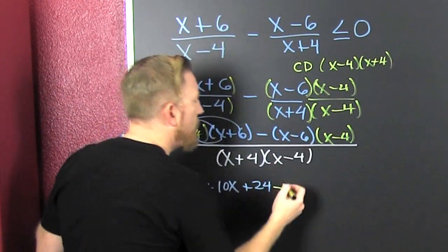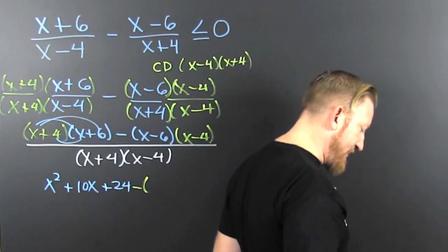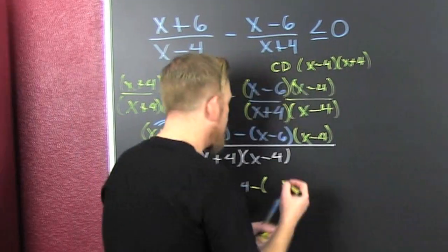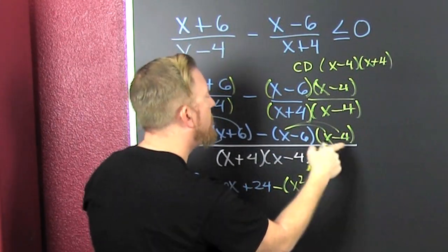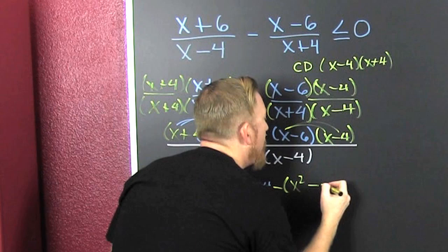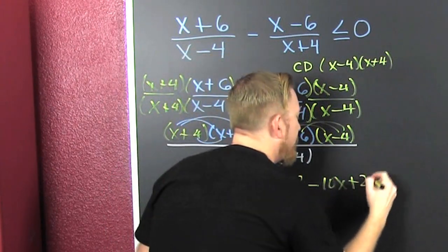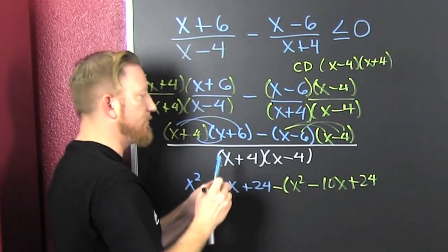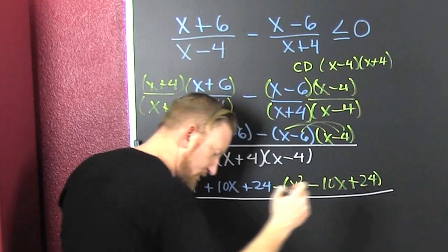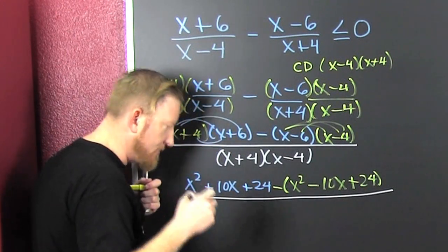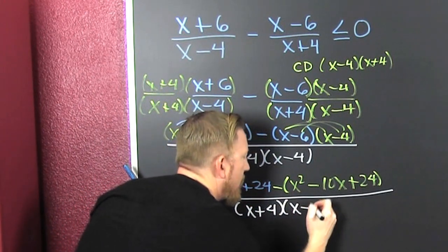And then that's gonna be minus - now it's gonna be minus this whole quantity. That's x squared, and then wait for it - minus 4x minus 6x, that's a minus 10x. Then minus and minus make plus, 6 times 4 is 24. Now what do we do? Close that up, put it all over the common denominator x plus 4 times x minus 4.